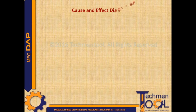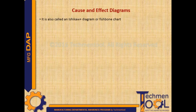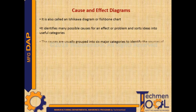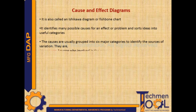Cause and Effect Diagrams, also called an Ishikawa diagram or fishbone chart, identifies many possible causes for an effect or problem and sorts ideas into useful categories. The causes are usually grouped into six major categories to identify the sources of variation.